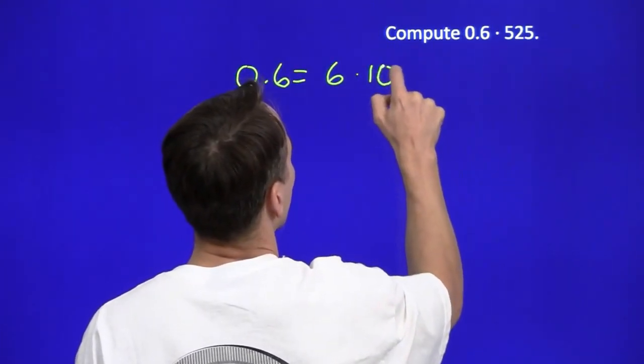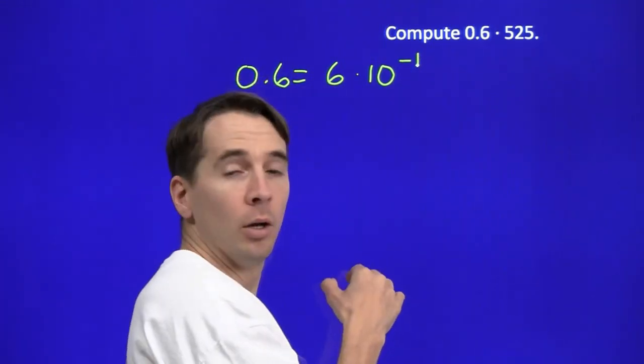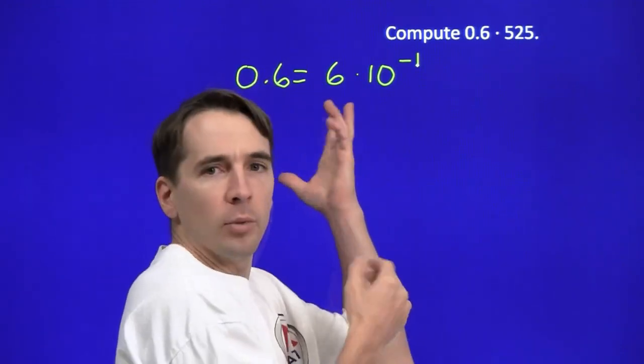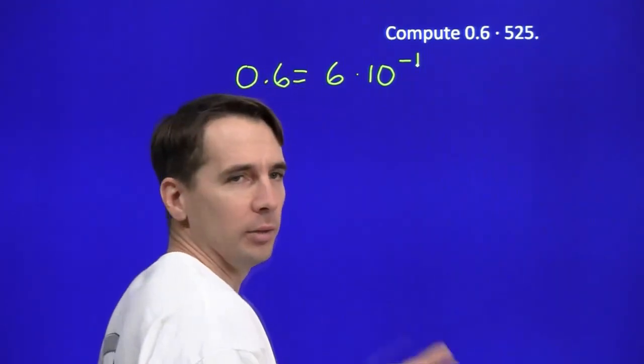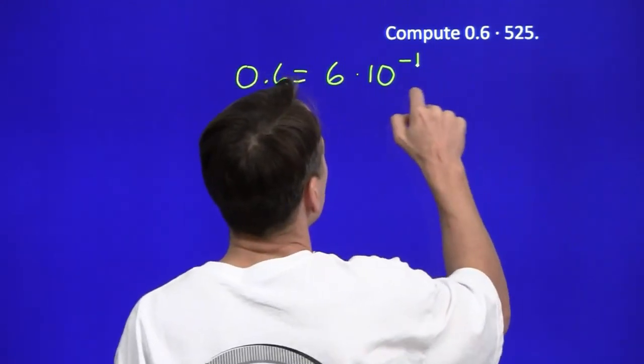This is just 6 times 10 to the minus 1. And we'll take the 6 and multiply by the 525. Oh, we could write this as a fraction too, but why do we care? I mean, all right, okay, I'll do it. We'll write this as a fraction. 10 to the minus 1, that's just 1 over 10.